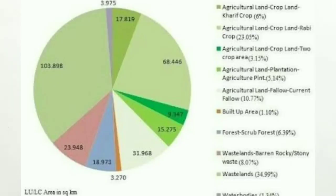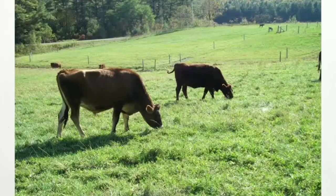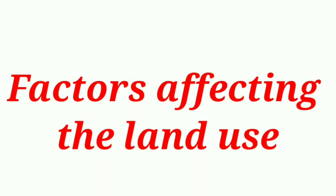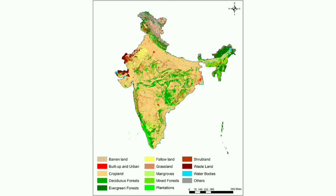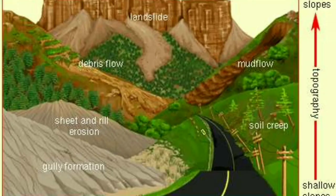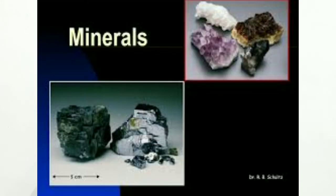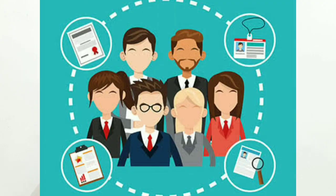For example, in India we have more land as cropland, while Australia has more land for pastures. There are different land use patterns as per the country. The factors affecting the land use pattern are climate, topography, types of soil, availability of water, minerals, technology and human resources.